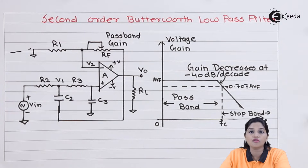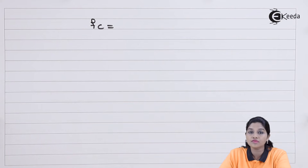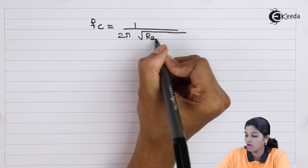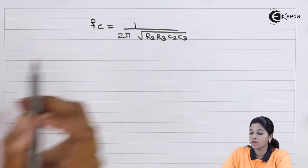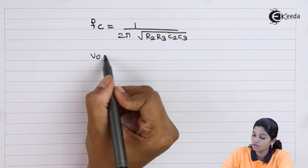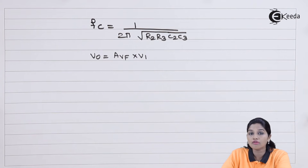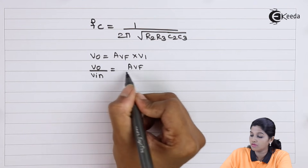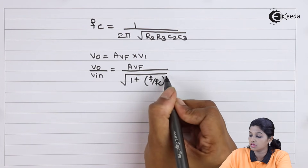The equation for cutoff frequency of the second order Butterworth low pass filter is: FC equals 1 divided by 2π times the square root of R2 × R3 × C2 × C3. All components in the RC network determine the cutoff frequency. The output voltage is given by VO equals AVF times V1. Therefore, the gain of the filter is: VO/Vin equals AVF divided by the square root of 1 plus (F/FC) raised to the power 4.